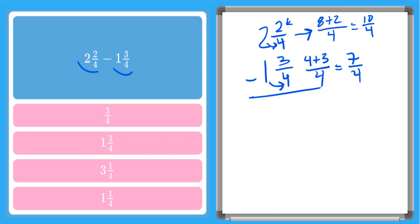So now I have 10 over 4 minus 7 over 4. I have the same denominator, so I can just subtract my numerators. 10 minus 7 will give me 3 over 4. And there we have it.